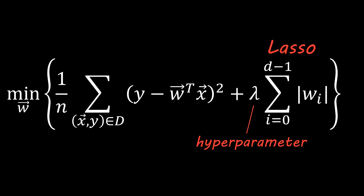Finally, we note that there are other forms of regularization. For example, if we take the square of the weights instead of the absolute value, we get what is called ridge regression.